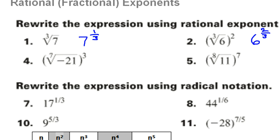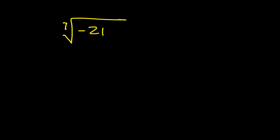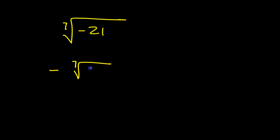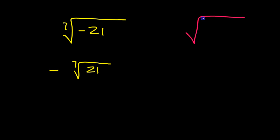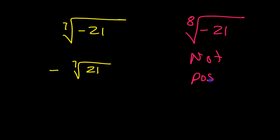What is the 7th root of negative 21? If you have an odd root, that negative is not going anywhere. So this is the same thing as negative 7th root of 21 — you can just bring the negative sign outside when the root is odd. If it were even — like the 8th root of negative 21 — I would say not possible. You can't take the even root of a negative number.